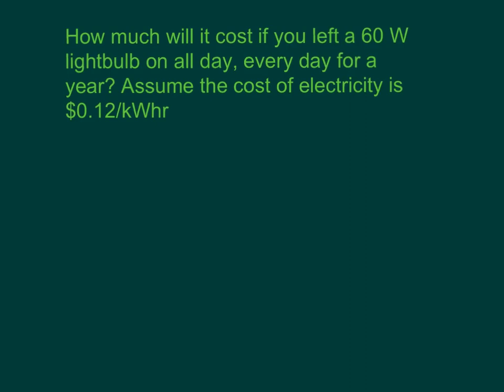You might also want to consider how much it would cost to run that light bulb. How much would it cost if you left a 60 watt light bulb on all day, every day for a year? This could be the light bulb in a closet, the garage, or the front porch light that you leave on all the time. We're not using P equals IV because we don't have a current, but we do know the power. Remember, power is our change in energy divided by time, so our energy is equal to our power times time.